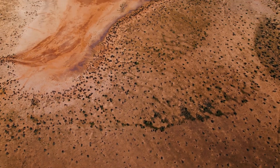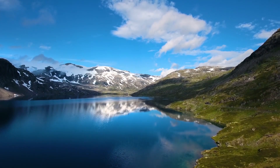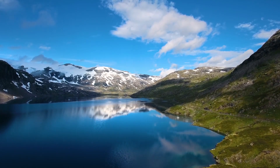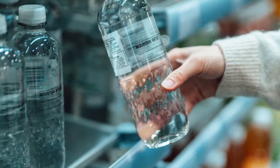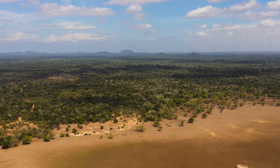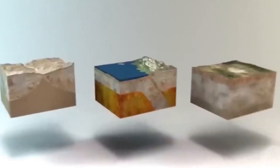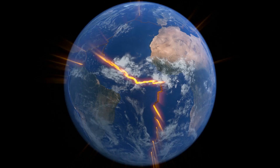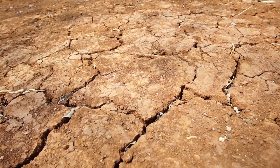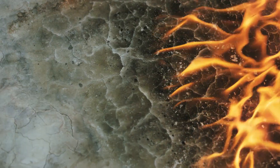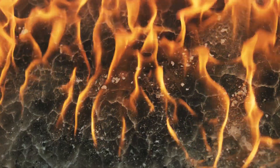Dried-up lakes, sometimes referred to as playa lakes or ephemeral lakes, are bodies of water that undergo variations in water levels as a result of variations in evaporation, precipitation, or human activities like water extraction. According to one theory, water functions as a lubricant along faults, lowering friction and promoting tectonic plate movement. The loss of lubrication caused by a dried-up lake's declining water levels may cause stress buildup along fault lines to grow, eventually reaching a point where an earthquake is set off.